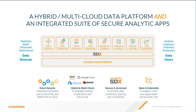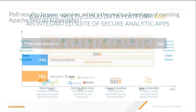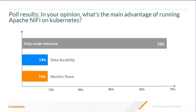Before I hand over to Michael and the demo, before this session, we sent a question on social media to ask you what you feel is the main advantage of running Apache NiFi on Kubernetes. And for most of you, it's really the autoscaling. So that's what we will be focusing on today. And obviously, autoscaling for NiFi is a big thing. Doing it right is not easy, and that's one of the main features we provide today with NiFi on Kubernetes.